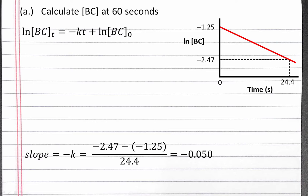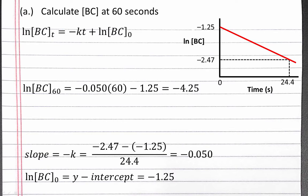Calculating our slope, it's negative 2.47 minus negative 1.25, which is our rise, divided by 24.4 minus 0, which is the run, and it equals negative 0.05. Also from the graph, we can see that our y-intercept is equal to the natural log of our initial BC concentration, and the y-intercept is negative 1.25. Plugging these into our integrated rate law for T equals 60 seconds, we get the natural log of BC at 60 seconds equals negative 0.05 times 60 seconds, minus 1.25, which equals negative 4.25. Taking e to the power of both sides, our concentration of BC at 60 seconds is e to the negative 4.25, which is 0.0143 molar.